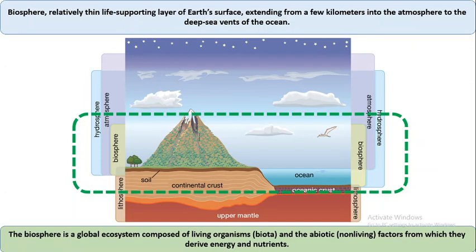The biosphere is a relatively thin life-supporting layer of earth's surface, extending from a few kilometers into the atmosphere to the deep sea vents of the ocean. The biosphere is a global ecosystem composed of living organisms — that is biota — and the abiotic, that is non-living, factors from which they derive energy and nutrients. So the biosphere is a combination of biotic and abiotic components of the ecosystem, in which living things get support from the abiotic environment.